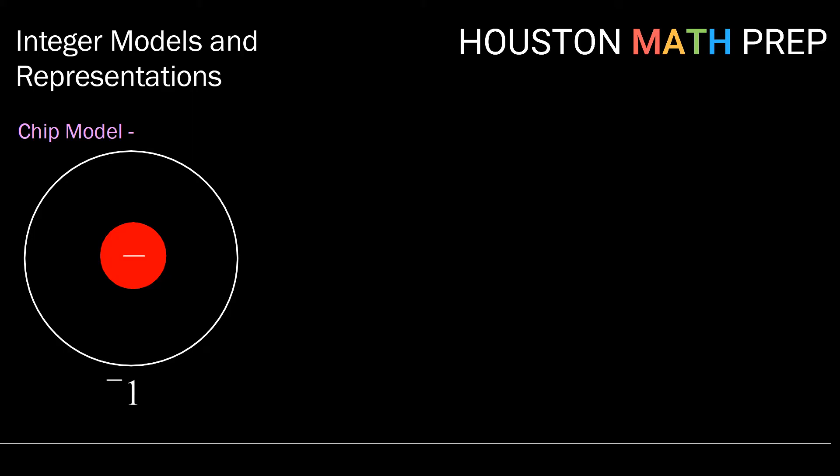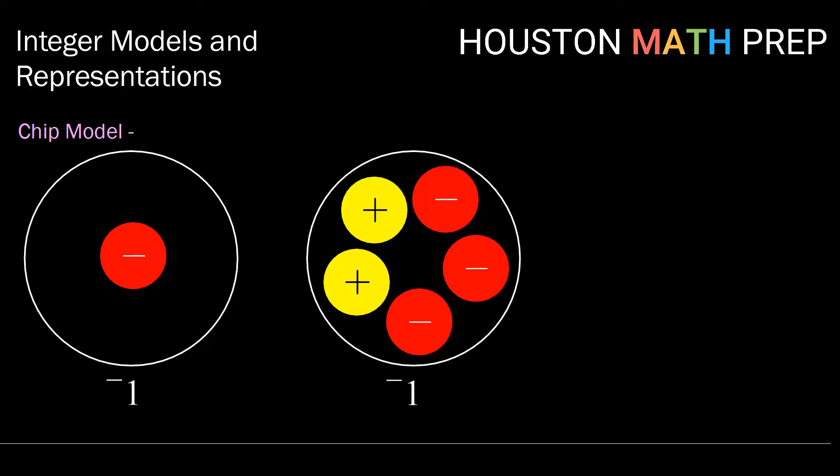We can model the number negative 1 using chips in several different ways. The most basic way is to just put one negative chip. But another way would be to have two positive chips and three negative chips. Here we recognize that if we pair a positive and a negative chip, those zero out. So when we zero those out and you can actually have students either stack them or remove them, then what we're left with is one red or negative chip.